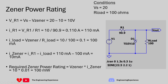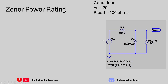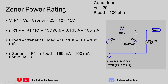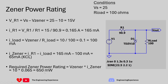Condition 2: Vs = 25 volts, load = 100 ohms. With 10 volts across the output junction, there's 15 volts on R1. The current through R1 is 165 milliamps, and the load current is still 100 milliamps since there's 10 volts across a 100 ohm resistor. That means the current going through the diode is 65 milliamps - the remainder using Kirchhoff's current law. With 65 milliamps and 10 volts across the diode, the power rating is 650 milliwatts. Again, this is not the worst case.